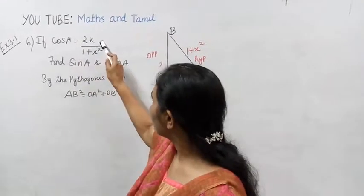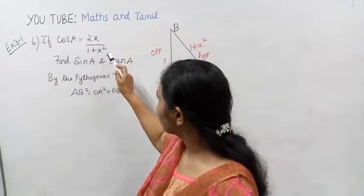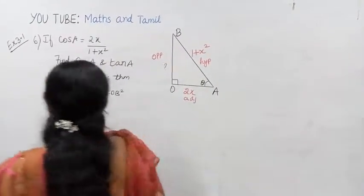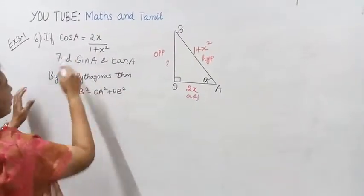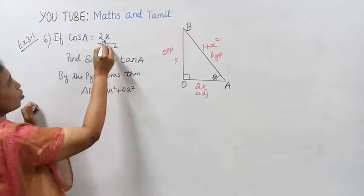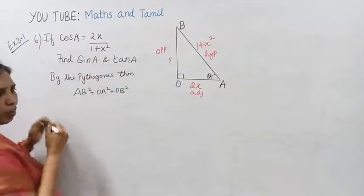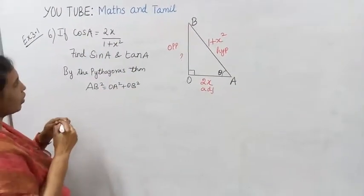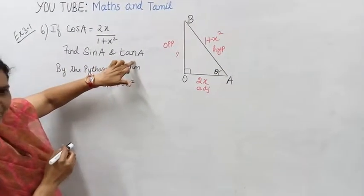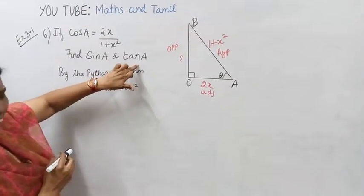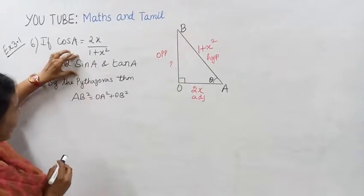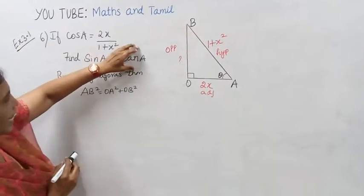Cos A is equal to 2x by 1 plus x squared. We will find sin A and tan A.